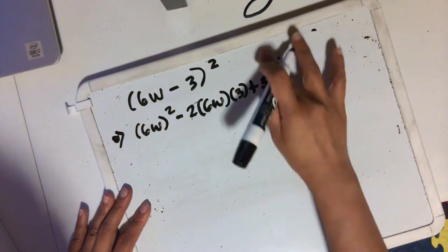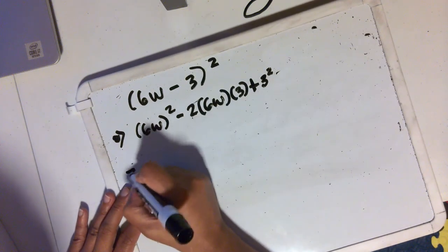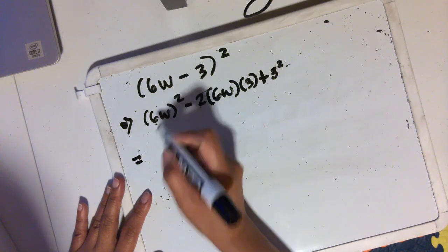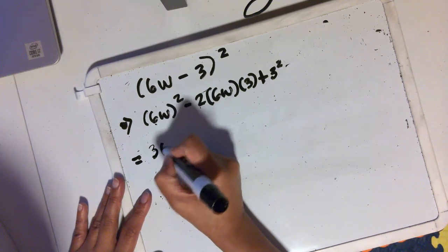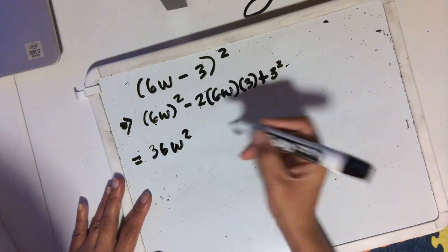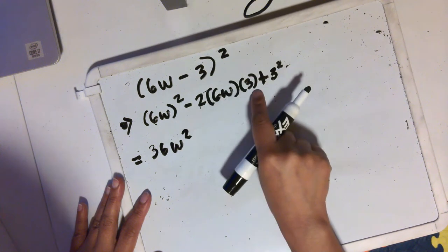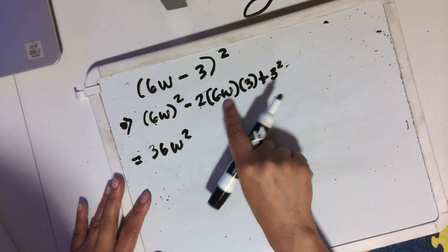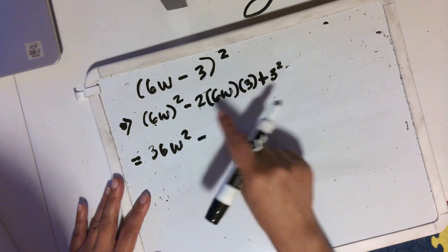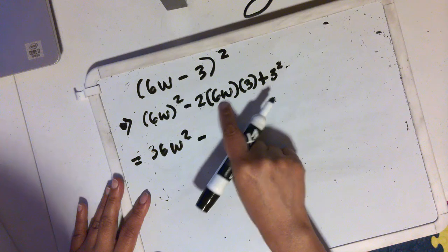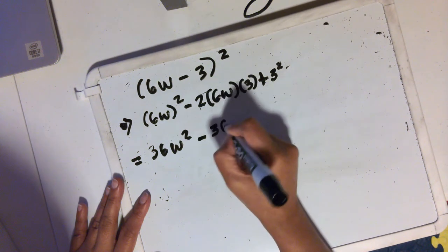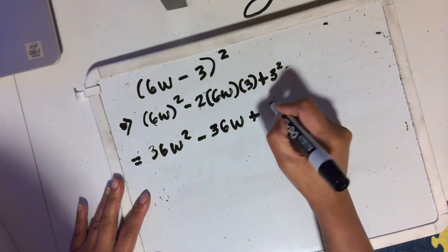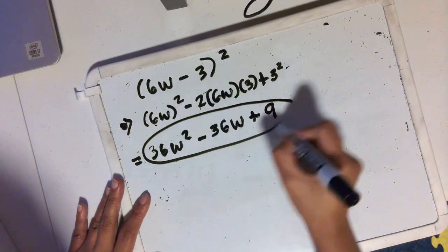So let me erase this portion. We have 6w squared — that's going to be the square of 6 and the square of w, so that's going to be 36w squared. If I multiply all these terms: negative times positive is negative, 2 times 6 is 12, 12 times 3 is 36. So I have 36w squared minus 36w plus 9. So this is the final answer.